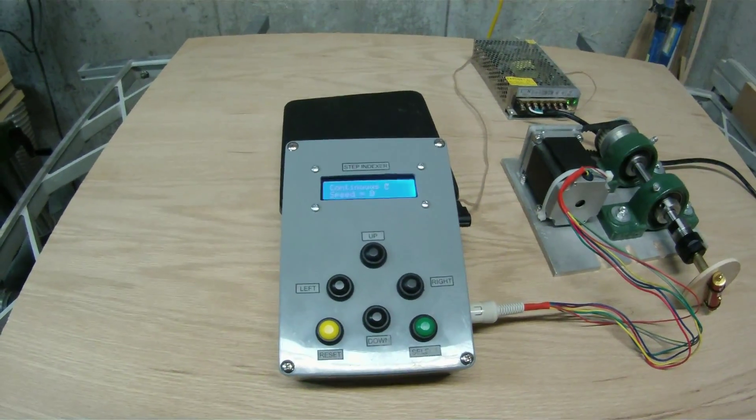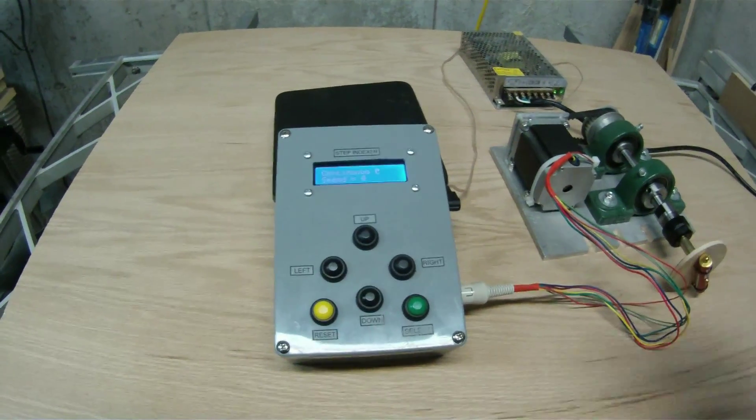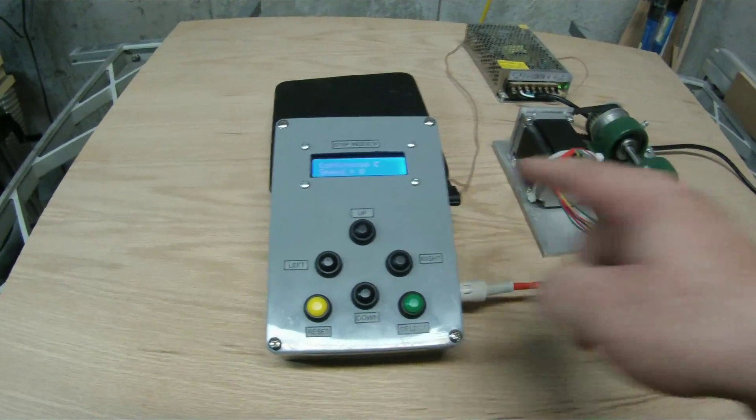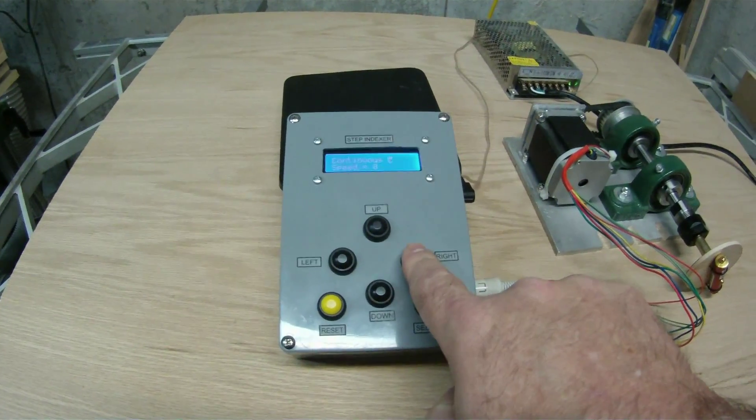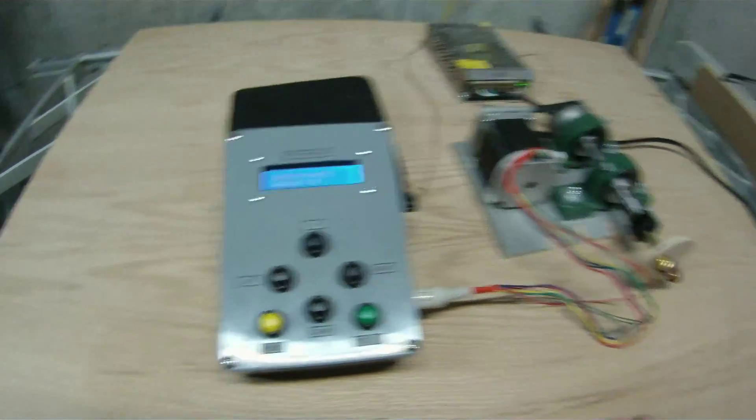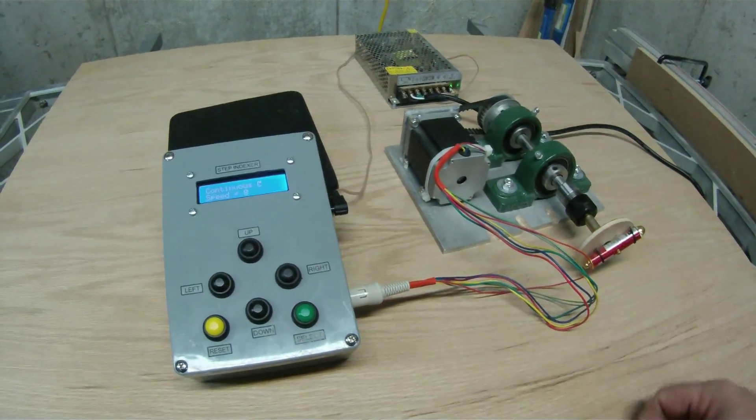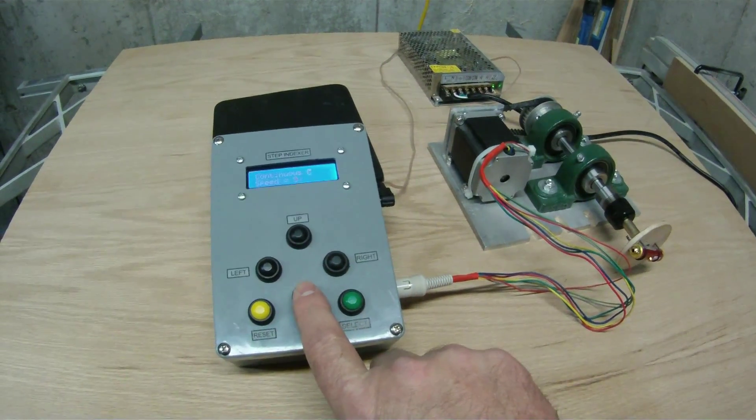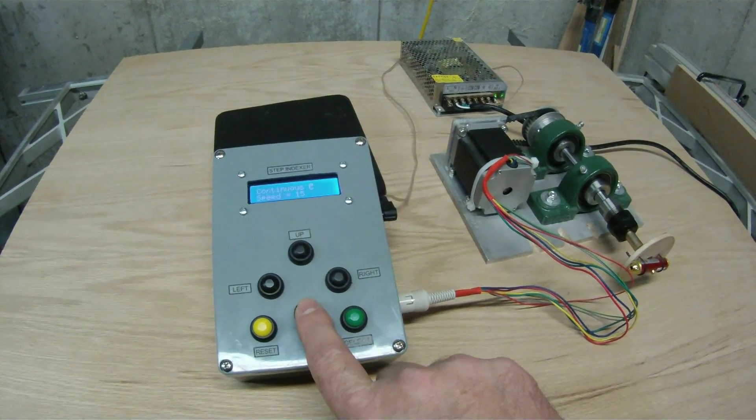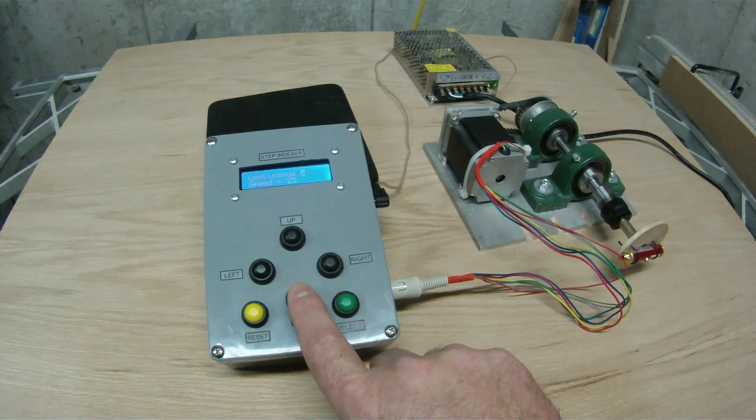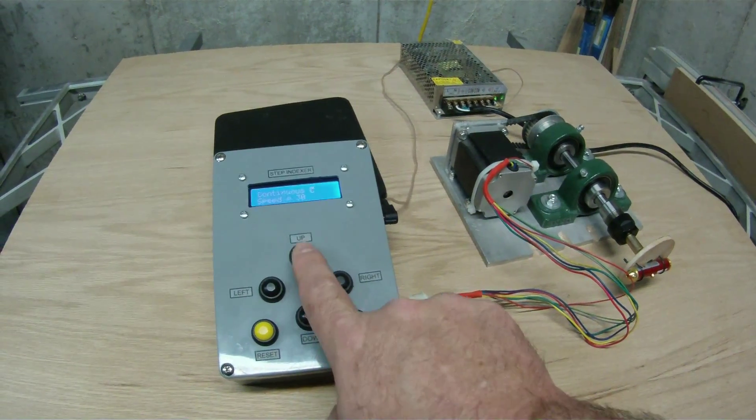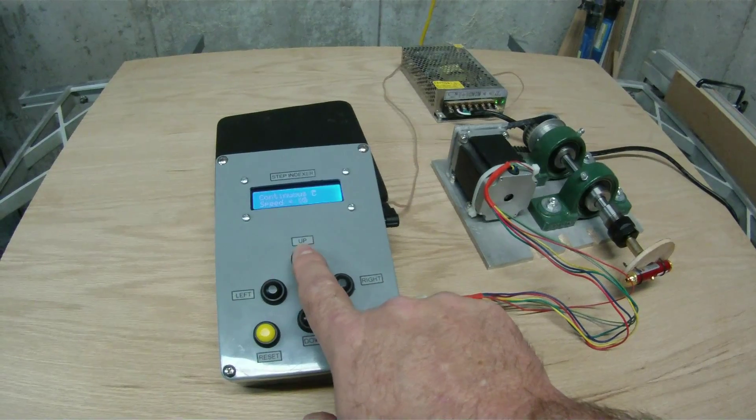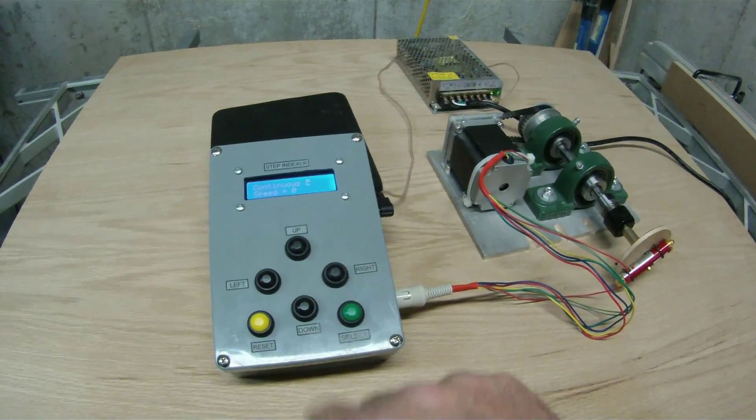the run mode just causes it to continuously move in the direction indicated. So if we hit the right arrow key, you can see that it starts to turn, and it's just going to do that all day long. We can slow it down though, if we press the down arrow, it'll slow it down quite a bit. We can speed it back up, there's full speed,